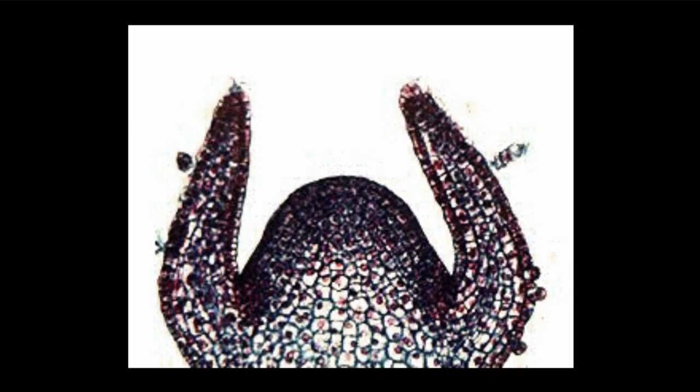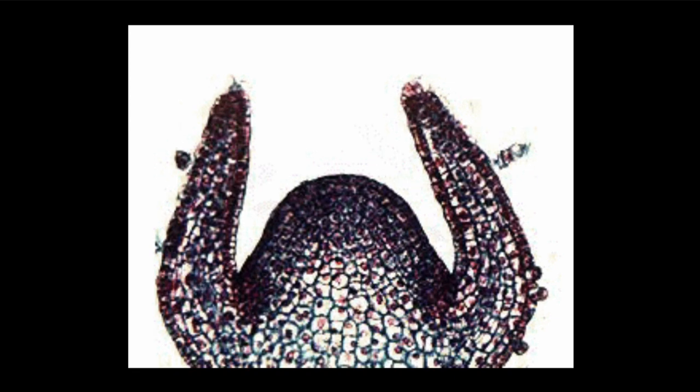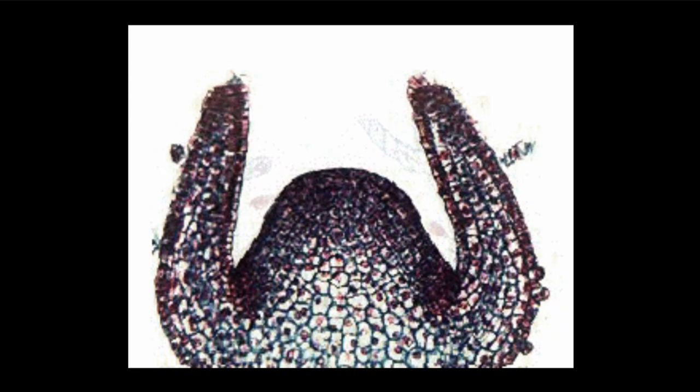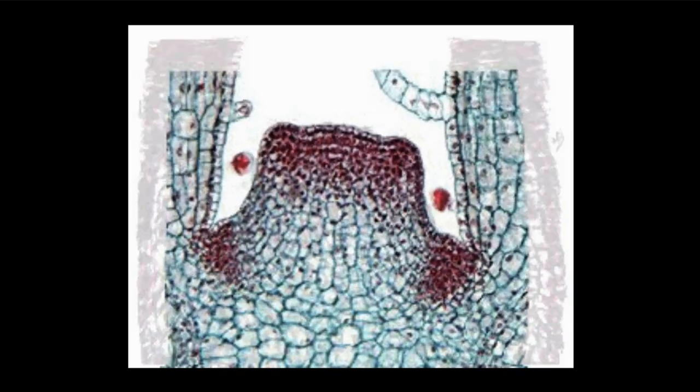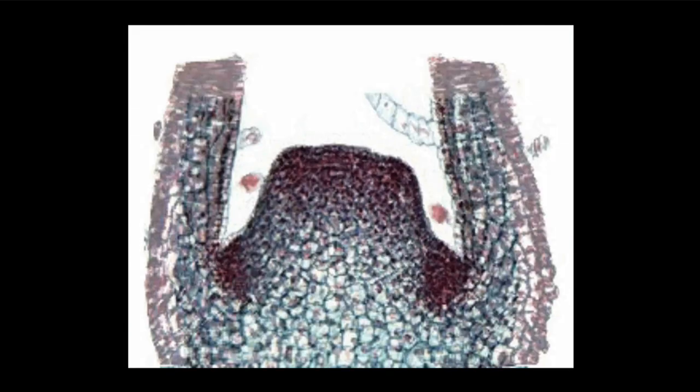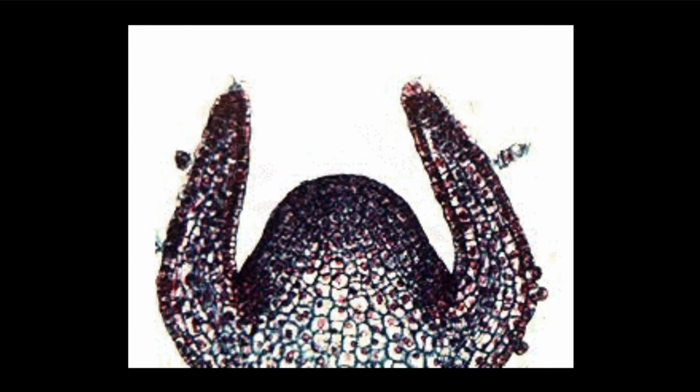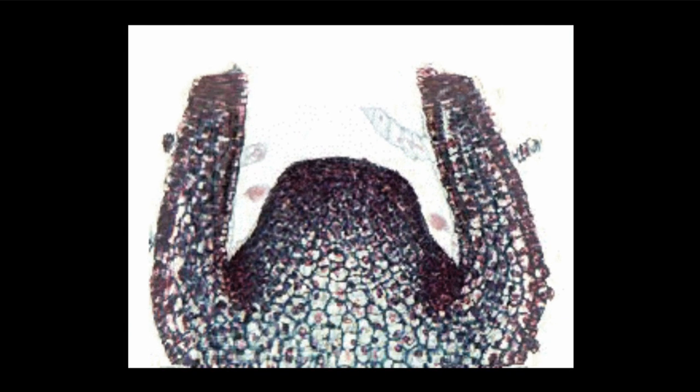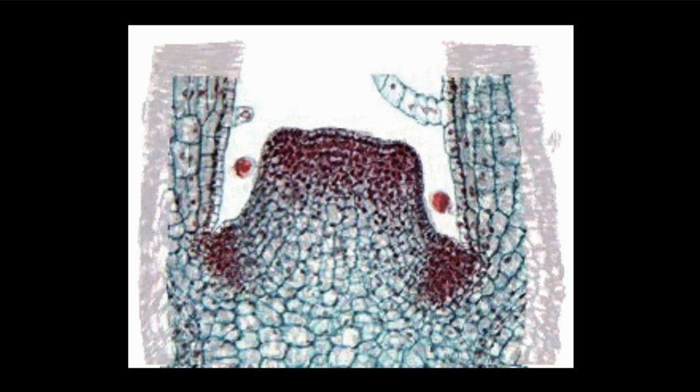Here I have a very interesting thing to show you - a video where we could actually see the division of meristematic tissue. Here we have a shoot tip. The darker or reddish black areas are the meristematic tissues. Now as I play the video, keep a close eye on these reddish dark areas.